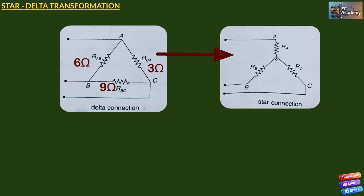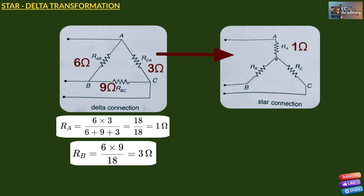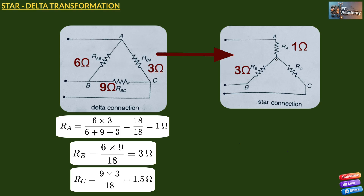Let us understand a practical example. Suppose RAB = 6 ohm, RBC = 9 ohm, RCA = 3 ohm. We can find the equivalent star resistances: RA = (6 × 3) / (6 + 9 + 3) = 18 / 18 = 1 ohm. Similarly, RB = (6 × 9) / 18 = 3 ohm. And RC = (9 × 3) / 18 = 1.5 ohm.